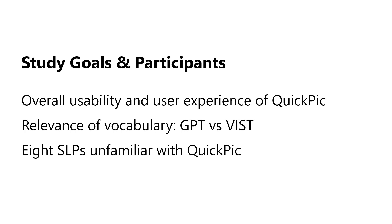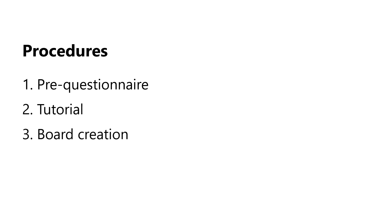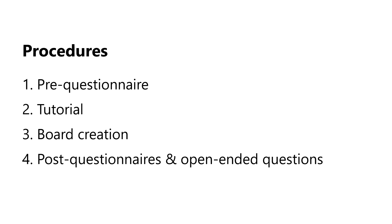To gather evidence regarding the overall usability and user experience of QuickPick, in addition to the relevance of vocabulary produced when powered by the two generation methods, we conducted a user study with a new group of eight SLPs who had not participated in the co-design process. Participants first completed a pre-questionnaire covering demographic information and past AAC experience, then went through a tutorial session. They used the app's search web function to create communication boards centered around the topics 'car' or 'train,' for working on commenting and describing scenes with short utterances with a hypothetical child with severe autism. Participants created one board using GPT and another using VIST generation, and finally filled out a post-questionnaire assessing usability, overall experience, and open-ended feedback.